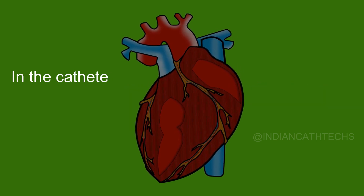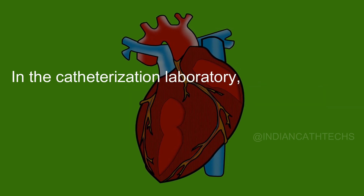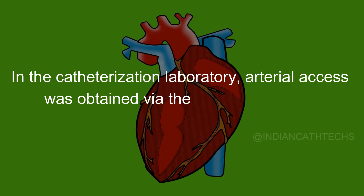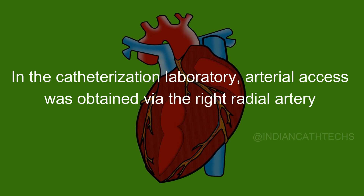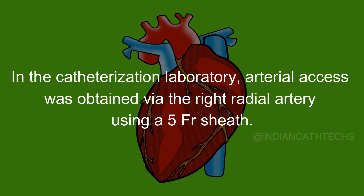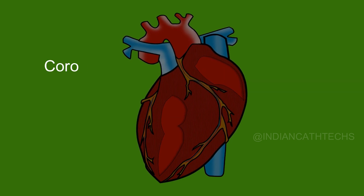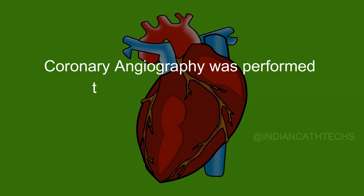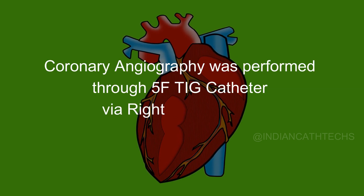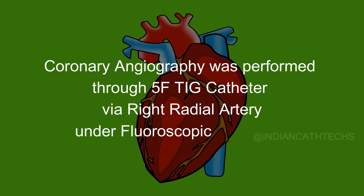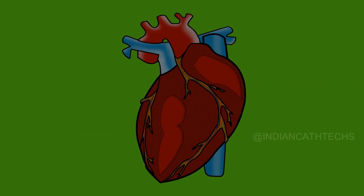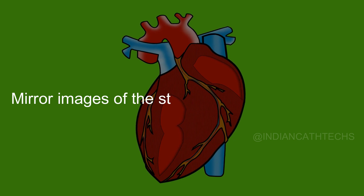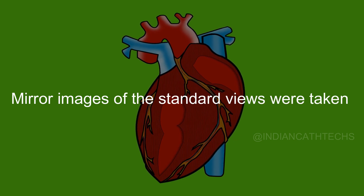In the catheterization laboratory, arterial access was obtained via the right radial artery using a 5 French sheath. Coronary angiography was performed through a 5 French TIG catheter via the right radial artery under fluoroscopic guidance. Mirror images of the standard views were taken.